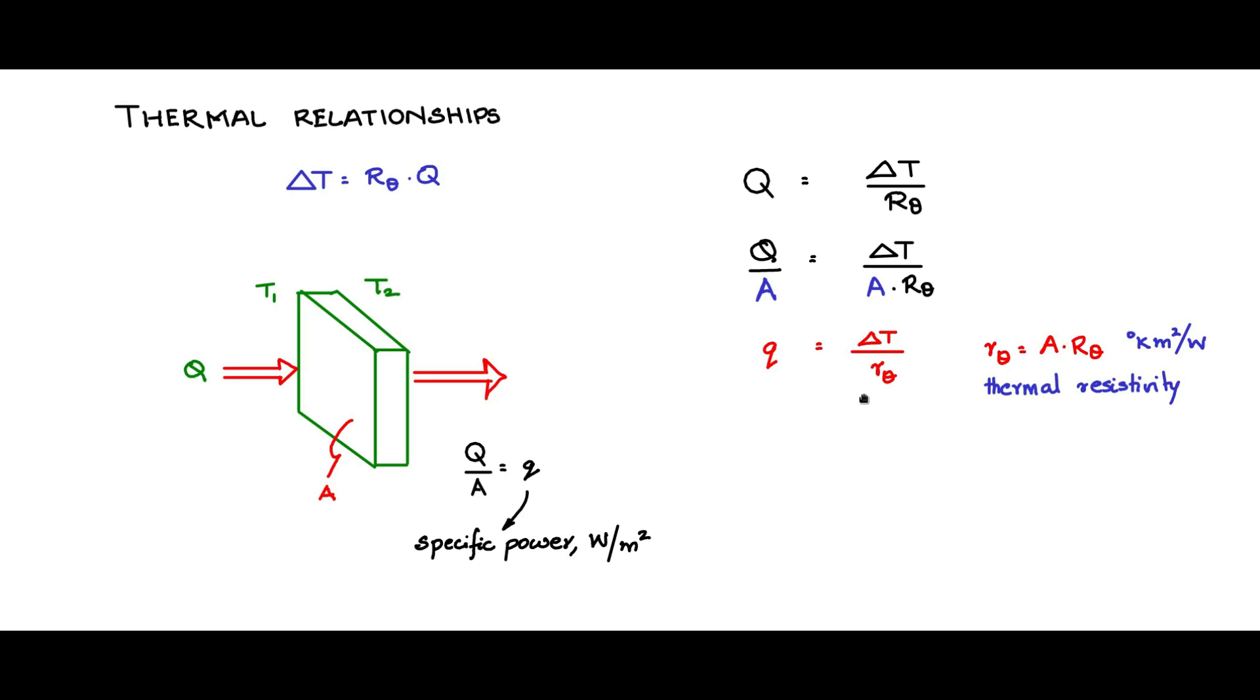Now there is another form also which is prevalent in the literature: q is equal to h ΔT, where one by rθ is put as h, and that is called the thermal coefficient. So you will see many literature using thermal coefficient. What it basically means is it is nothing but one by thermal resistivity, and it has the inverse units of this: watt per meter square per degree Kelvin, so watts per degree Kelvin per meter square.